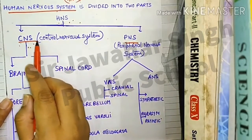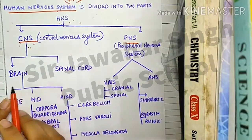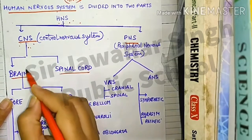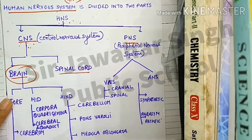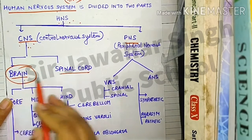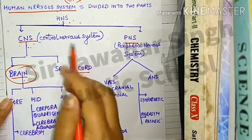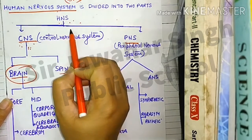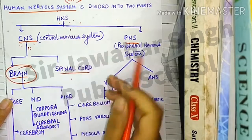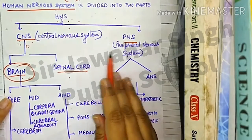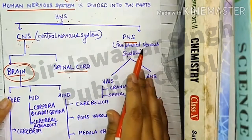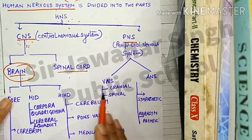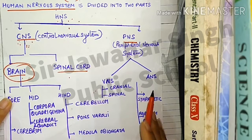The Central Nervous System is further divided into two parts: brain and spinal cord. Brain and spinal cord come under CNS, and CNS comes under HNS. PNS, the Peripheral Nervous System, is divided into two parts: VNS and ANS.